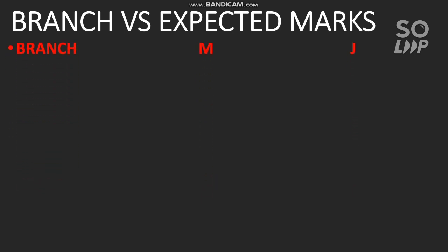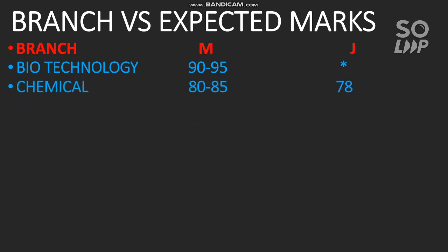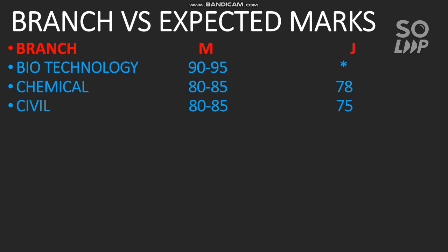Here are the branch cutoffs for main campus (MU main) and Jaipur campus. For Biotechnology in main campus, 90 to 95 marks are required at least; there is no Biotechnology branch in Jaipur campus. For Chemical Engineering, 80 to 85 marks in main campus and 78 marks at least for Jaipur campus. For Civil Engineering, 80 to 85 in main campus and 75 in Jaipur campus. For Computer and Computing, 145 to 155 marks are required in main campus — if you scored 5 to 10 marks less, you can still get it with careful counseling.